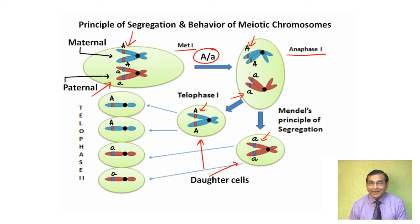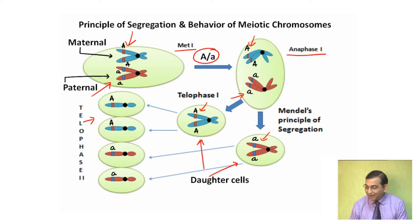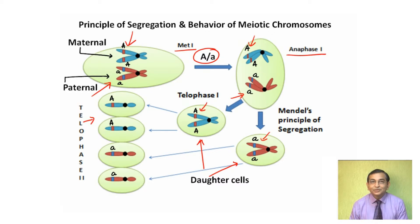Ultimately, at telophase two stage, four gametes are formed. Half of the gametes carry the capital A allele and half carry the small a allele. So the segregation of chromosomes and the segregation of alleles are parallel.